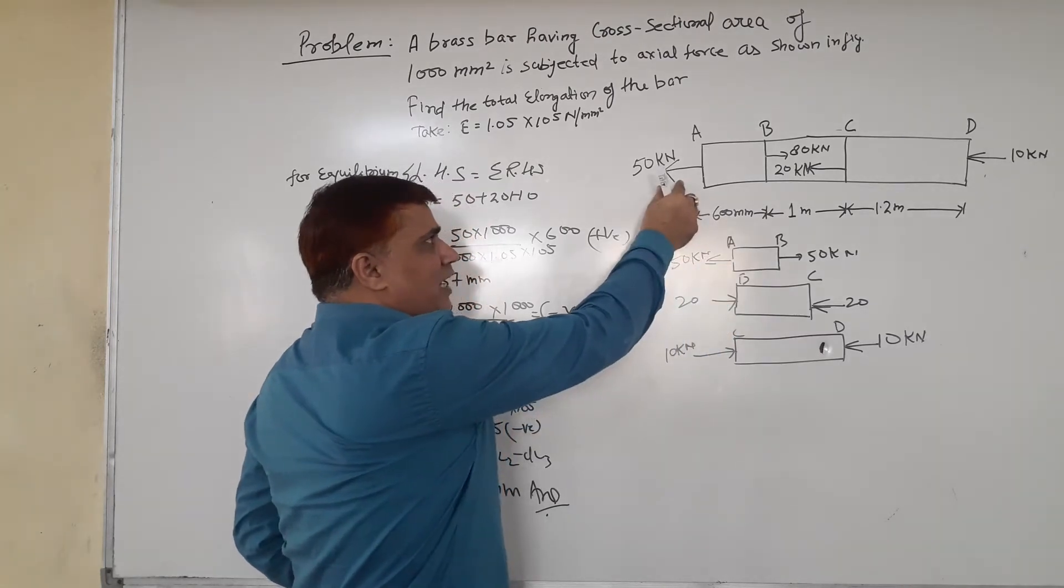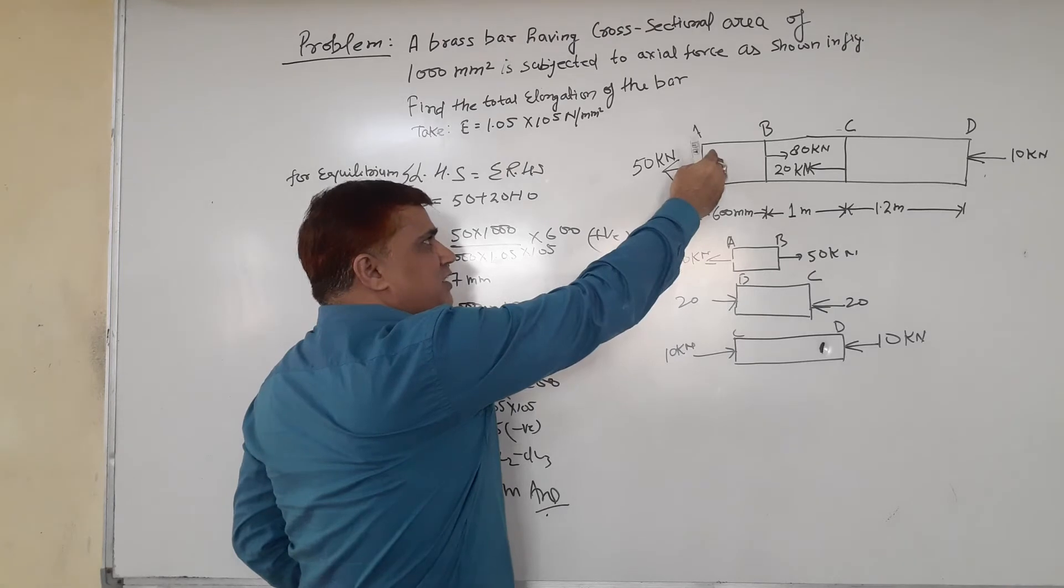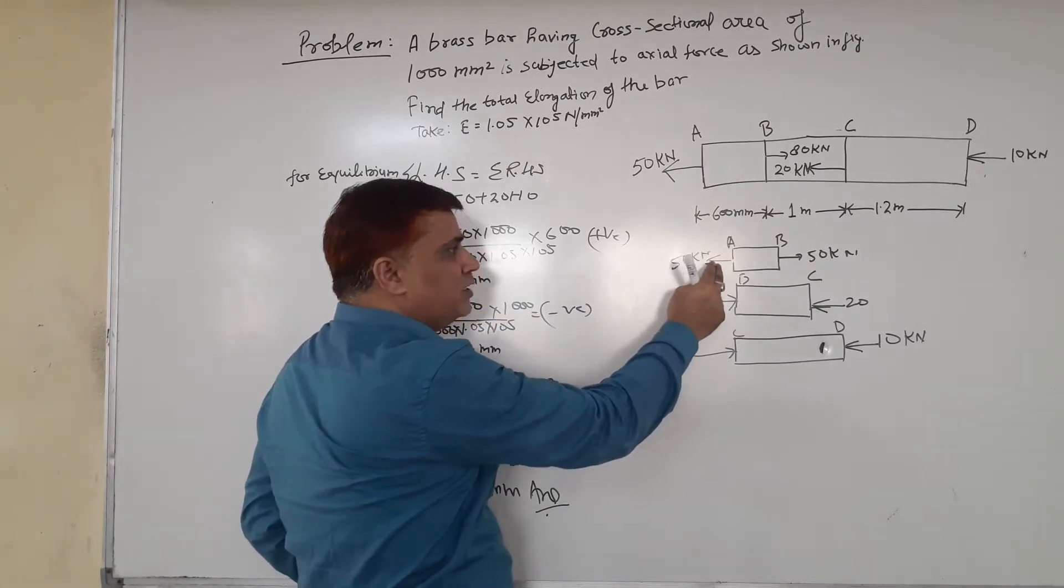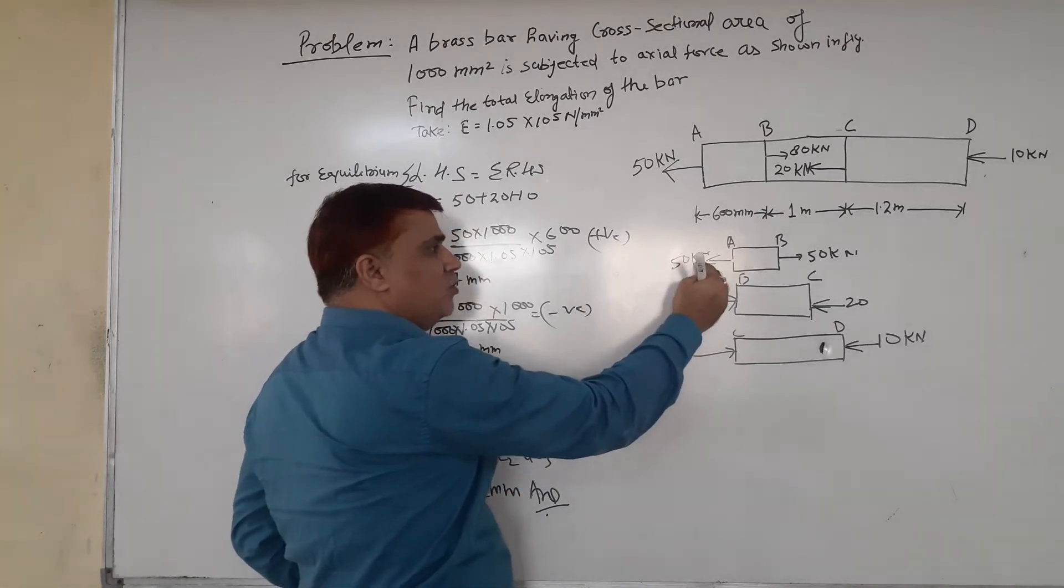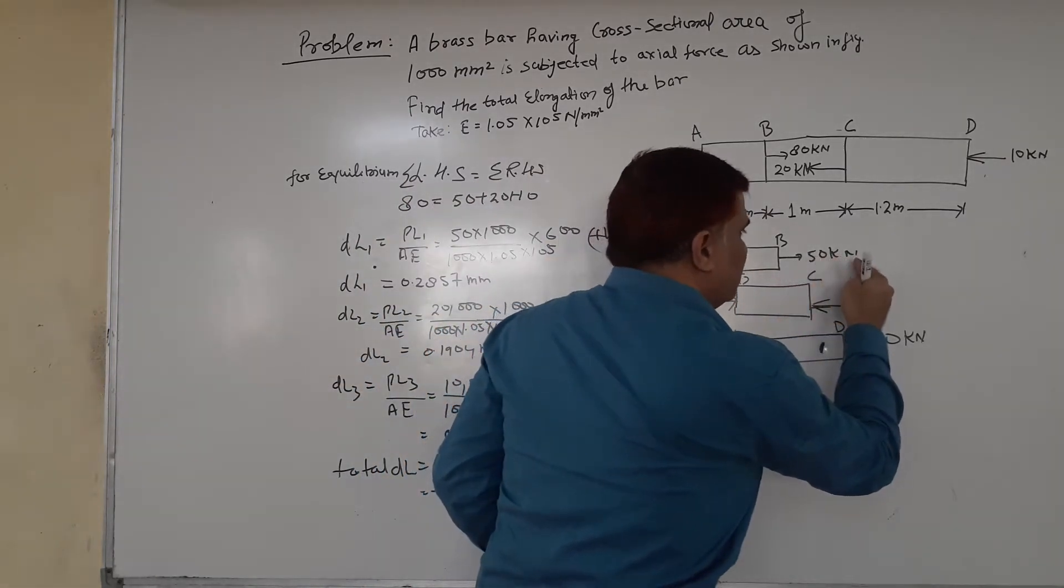Here we see that 50 kN is acting on section AB as a tensile force. We have to apply 50 kN.